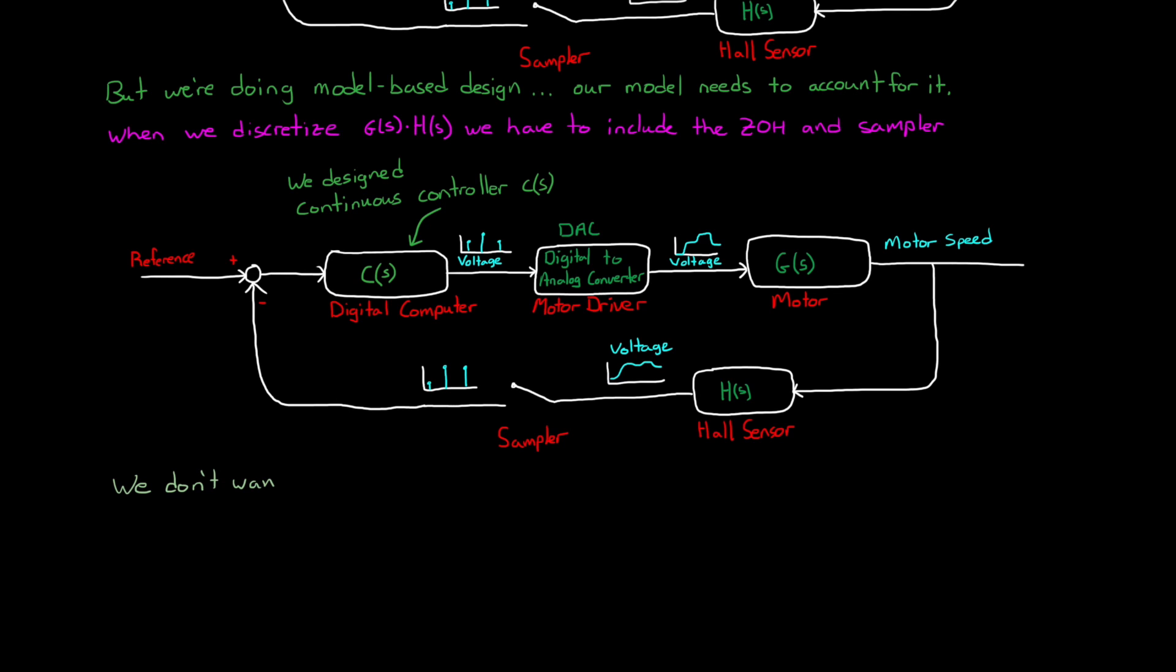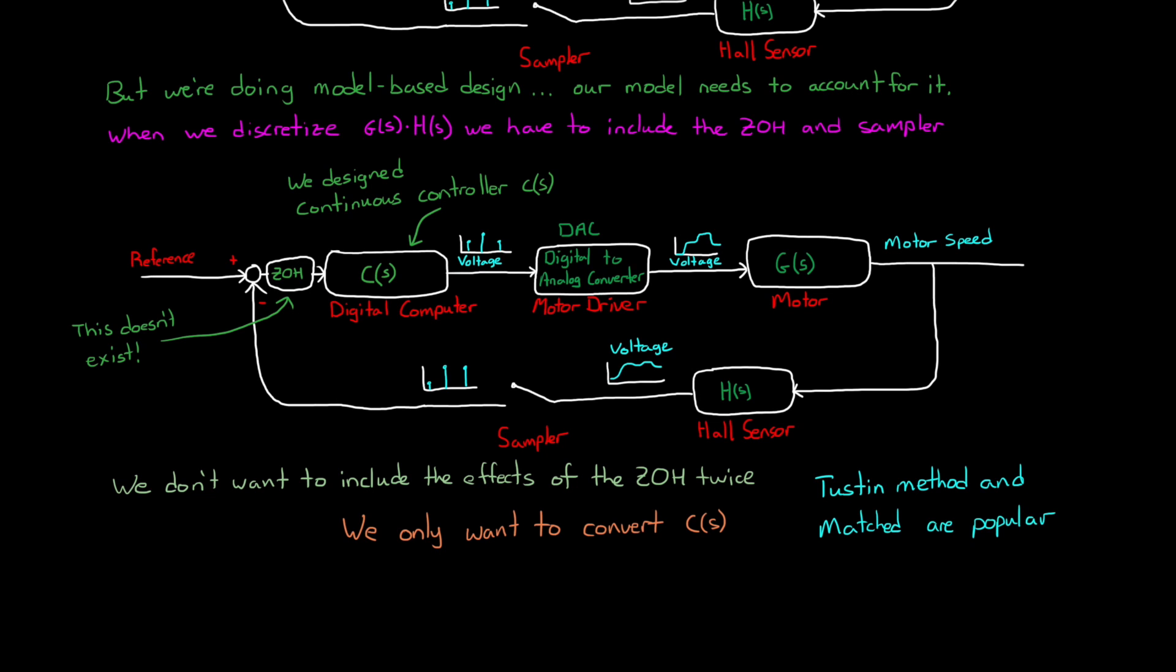Now, it doesn't make sense to include the zero-order hold as part of this conversion. If you convert the controller with the zero-order hold method, you are basically including the effects of the hold twice. Basically you're saying that there is a zero-order hold here before the digital controller, which is not the case. Therefore, if you're designing a continuous controller and then discretizing it, some other discretization method is probably preferred. Something that just converts the controller itself and doesn't include any hold logic with it. We could use the impulse method like we discussed last time, but more popular methods include the Tustin method and the matched pole zero method. Now, I'll cover those in the next video so I can make it a bit more focused on them specifically, but before I end this video, I want to touch on a few more things just to get you thinking about them in the meantime.